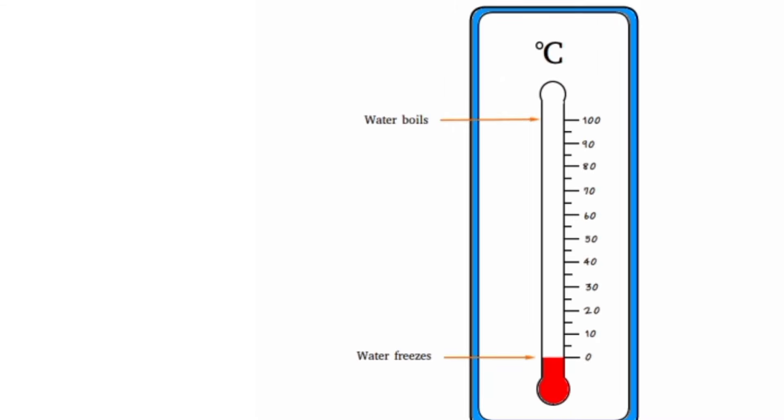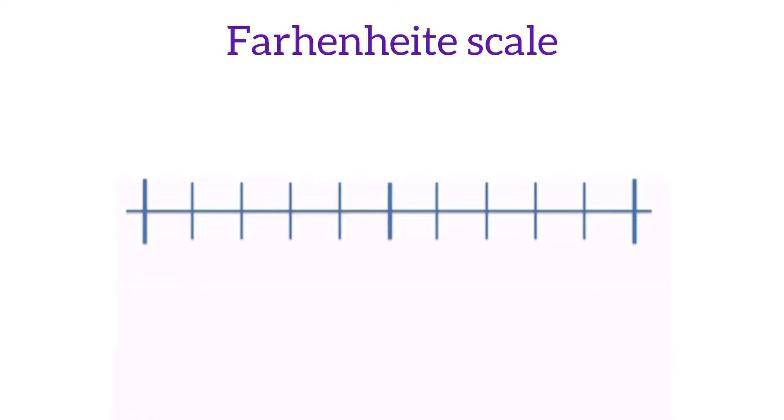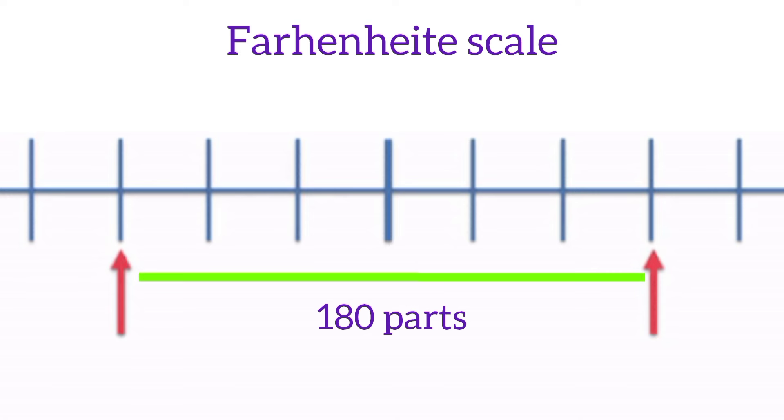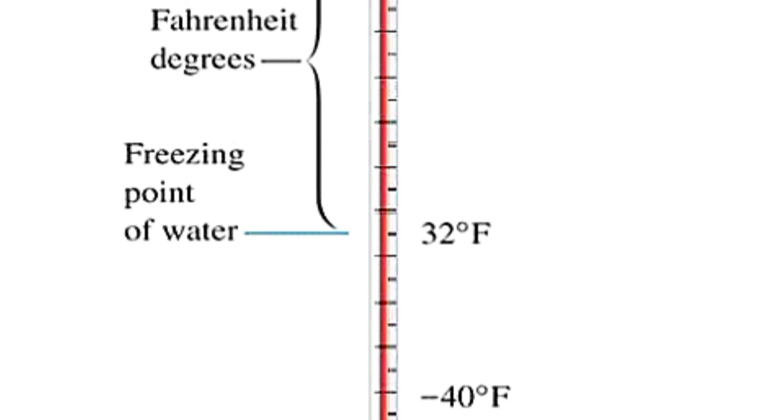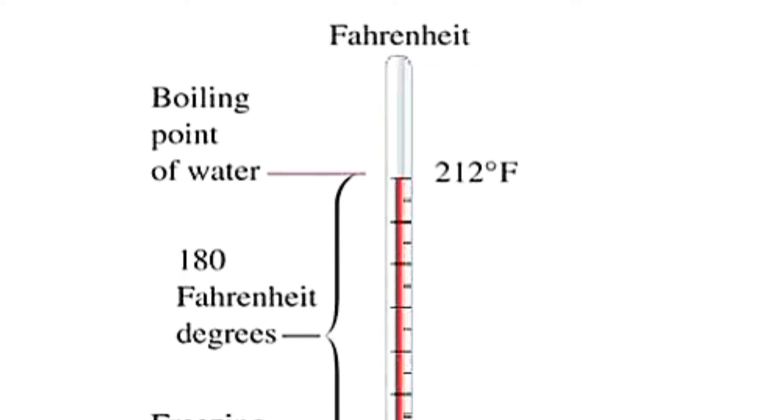Our next scale is the Fahrenheit scale. It was developed by Daniel Gabriel Fahrenheit in early 18th century. On this scale, the two points, freezing point and the boiling point, are divided into 180 parts and each part is known as 1 degree Fahrenheit. The freezing point is taken as 32 degree Fahrenheit while the boiling point is taken as 212 degree Fahrenheit.